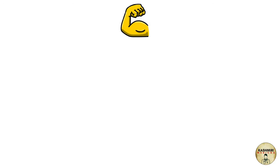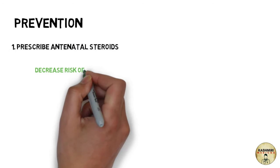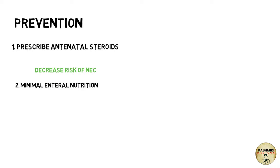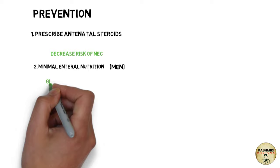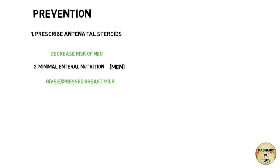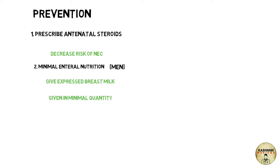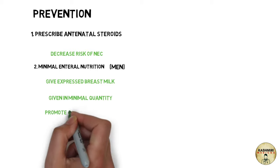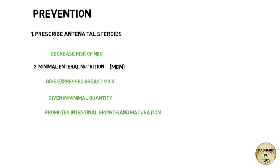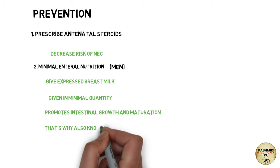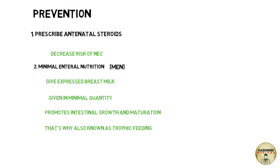The final part is prevention of NEC. Antenatal steroids are prescribed to decrease the risk. Then there is minimal enteral nutrition (MEN), where expressed breast milk is given in minimal quantities — about 15 to 20 ml per kg per day — not for nutritional value but to promote intestinal growth and maturation; this is also known as trophic feeding. Finally, enterally fed probiotics such as lactobacillus and bifidobacterium are also helpful.